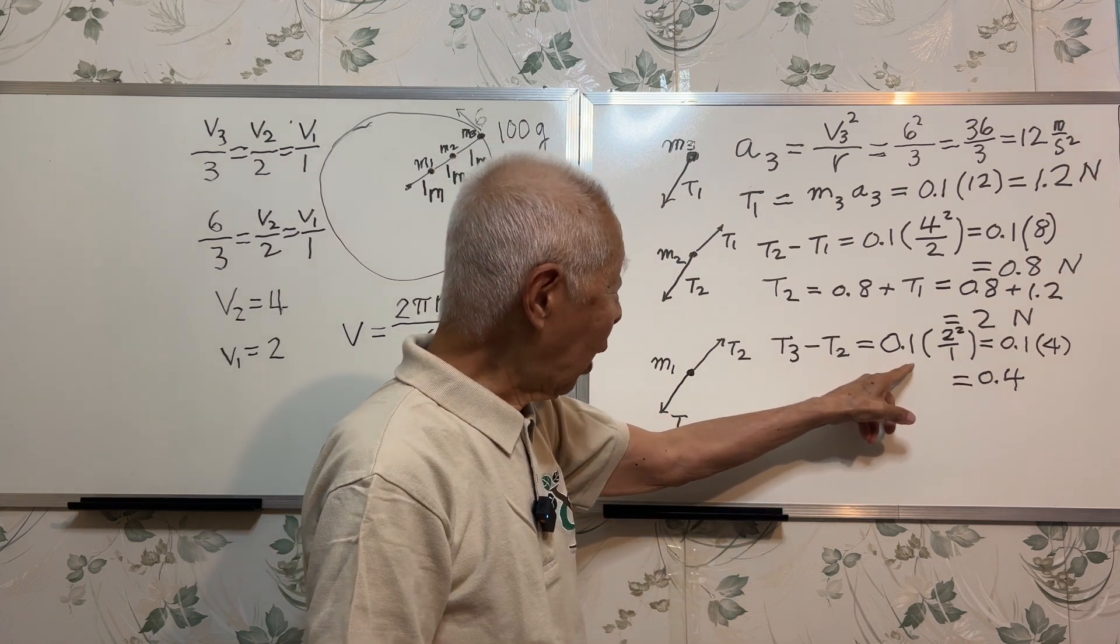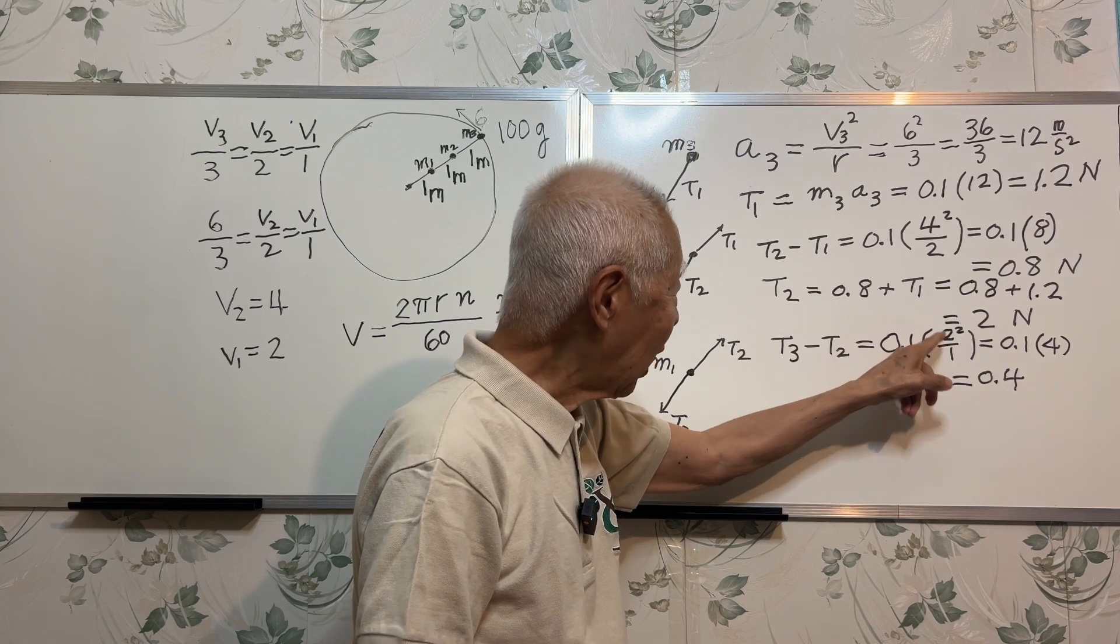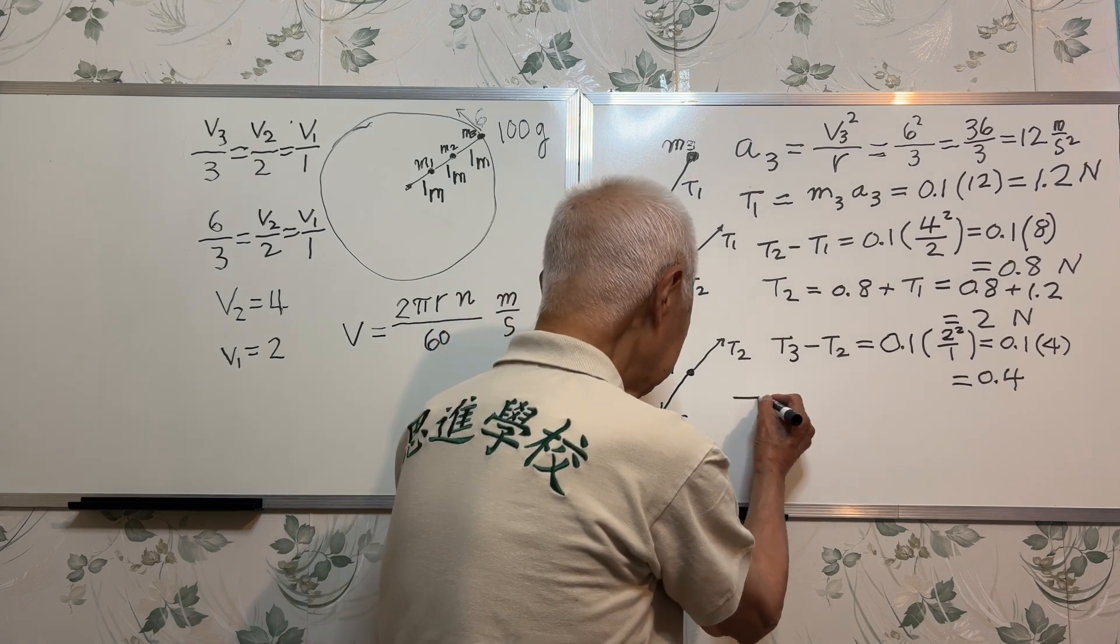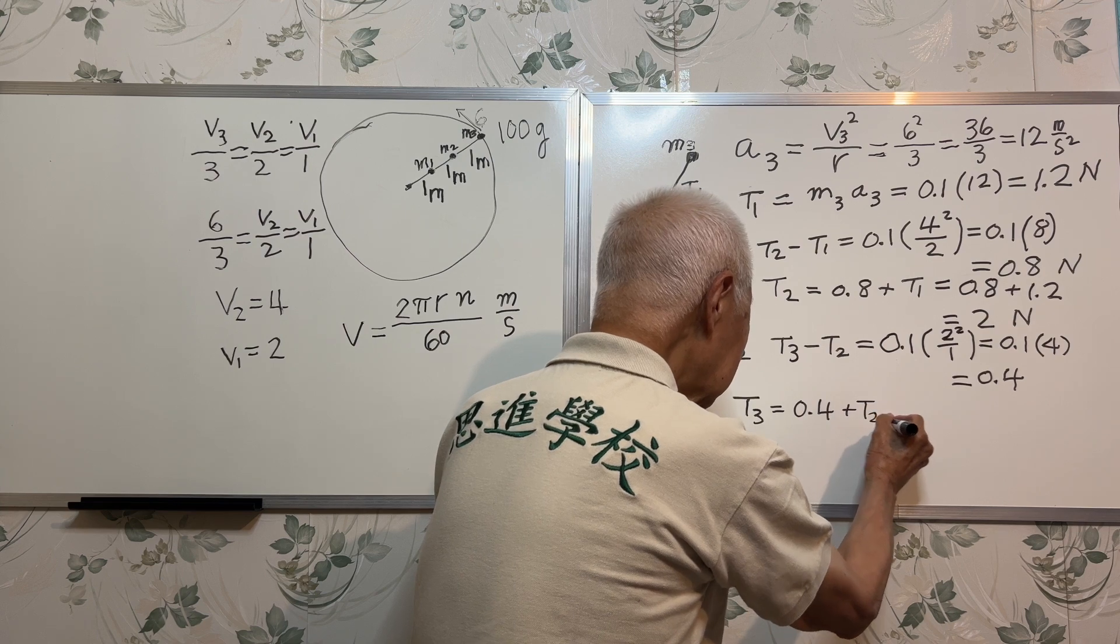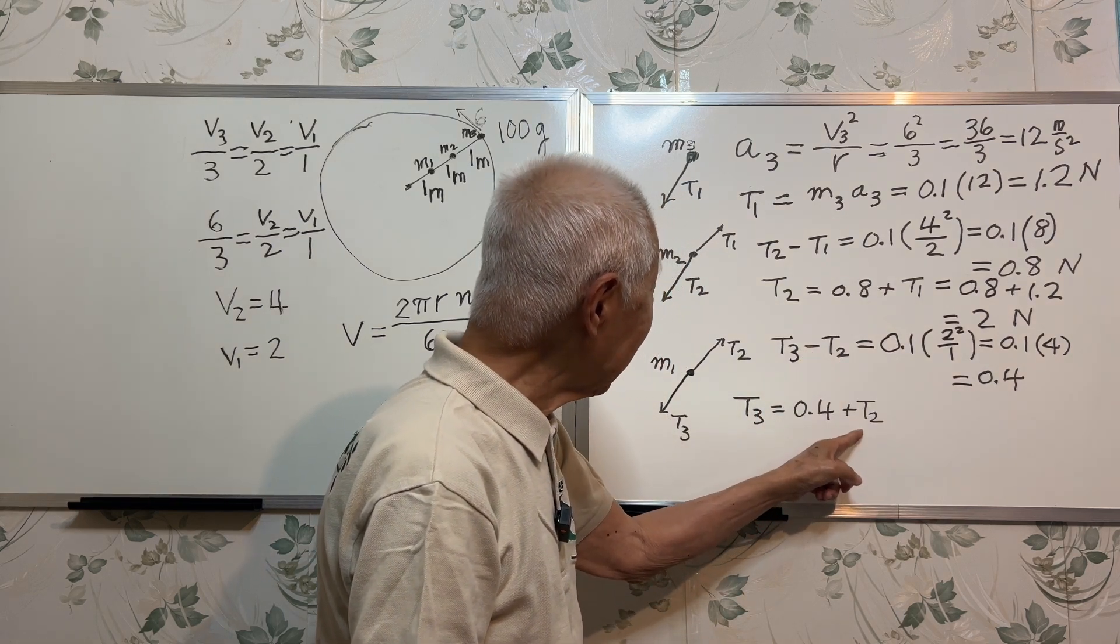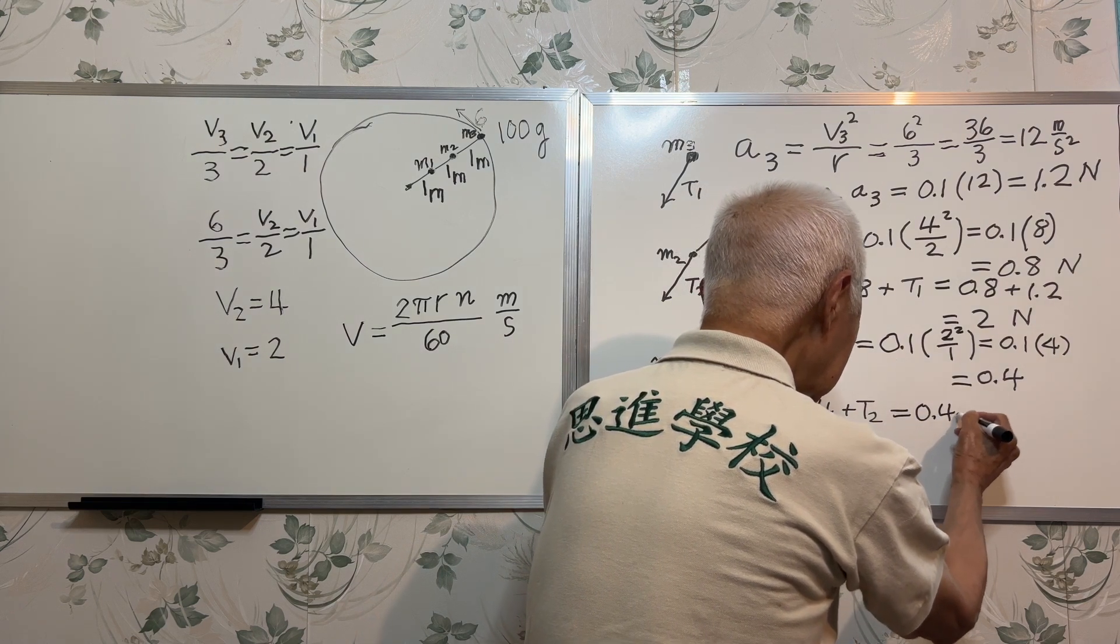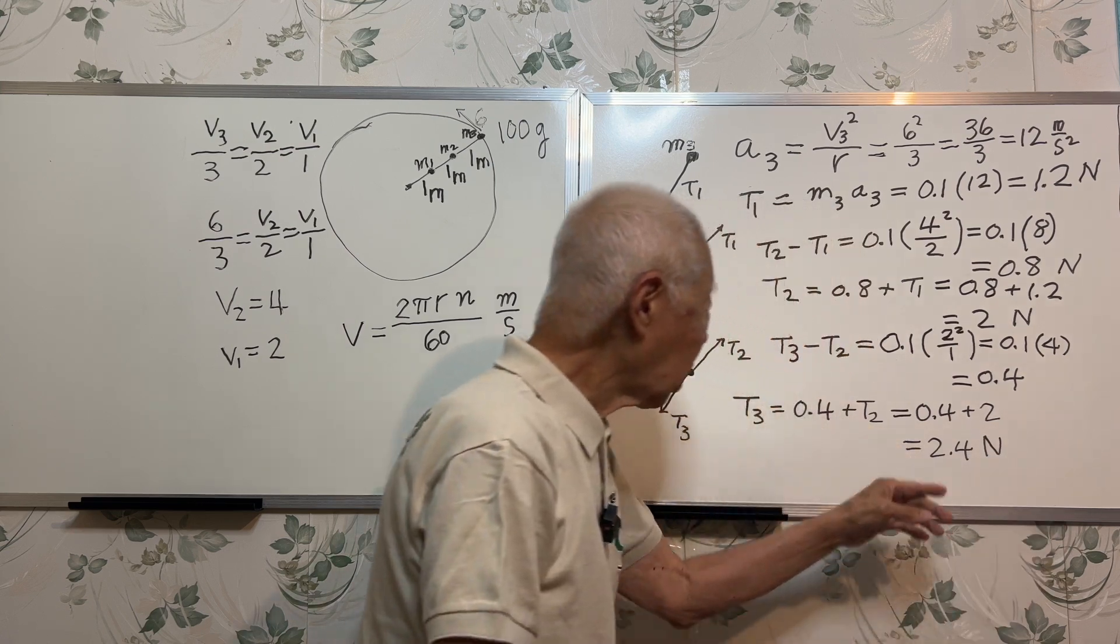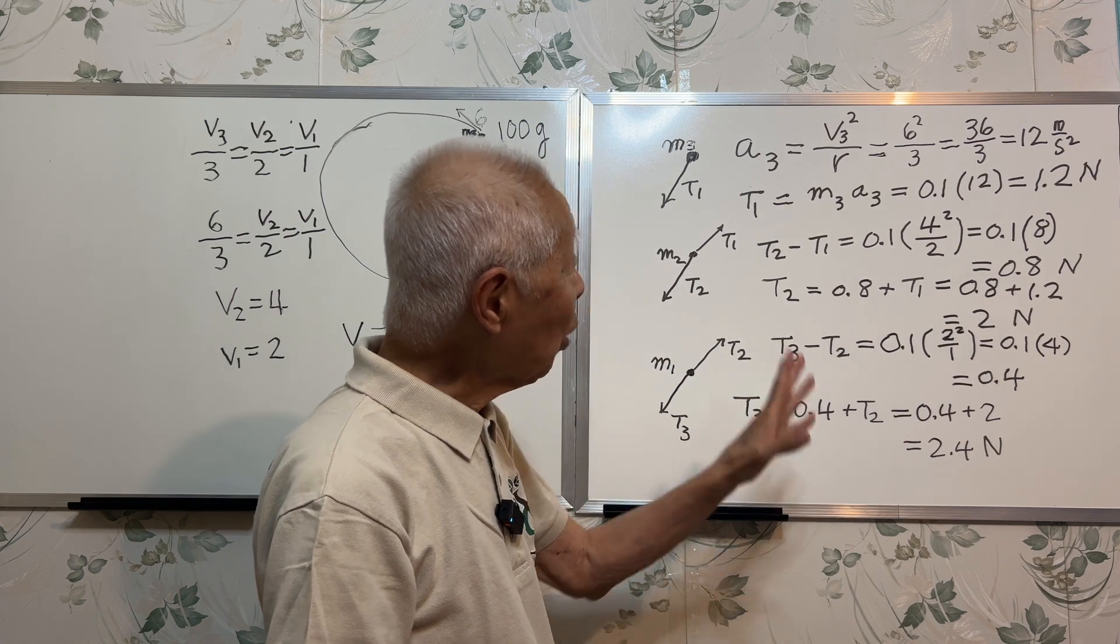Mass is 0.1, acceleration is v squared over r, v is 2, so I have 4. Therefore the net force is 0.4. I want to find T3, so T3 is 0.4 plus T2. T2 we already have it, T2 is 2 newtons.